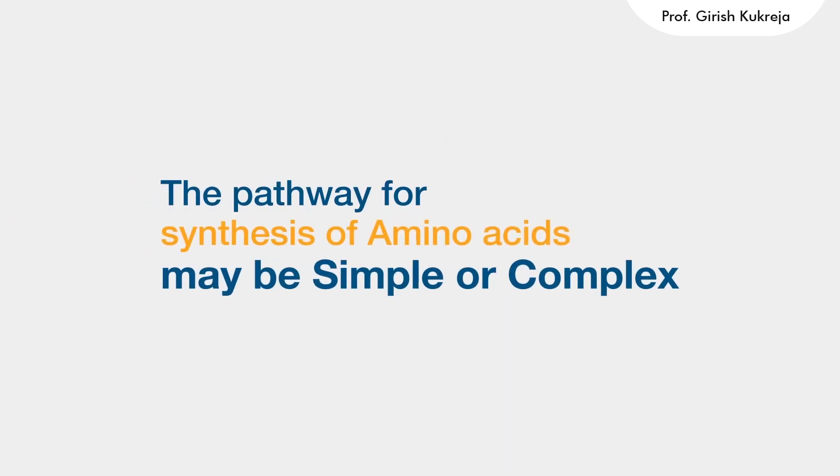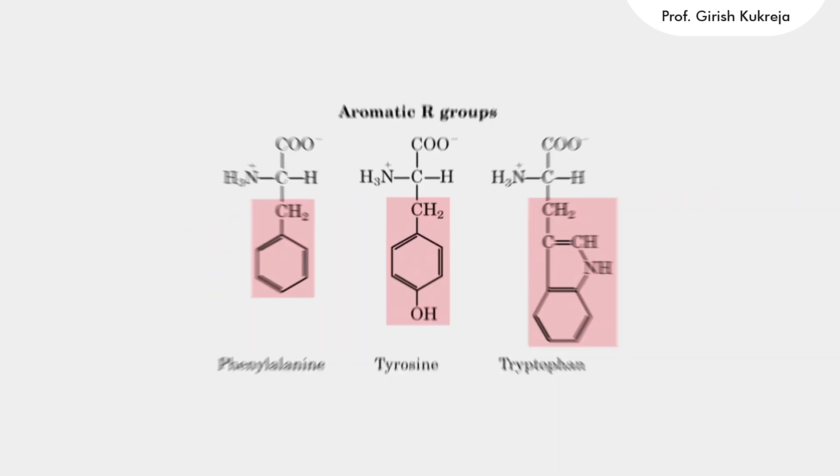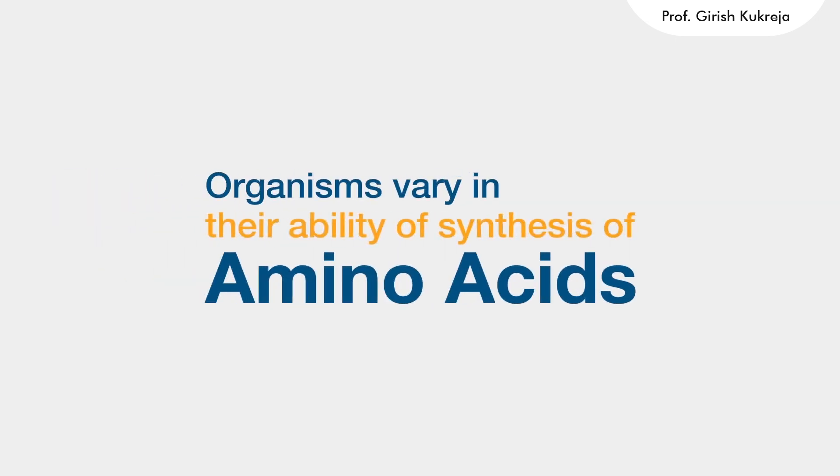The pathway for synthesis of amino acids is quite diverse. Ten of the amino acids are synthesized by only one or two steps after intermediates are removed from these respective pathways, while others have a more complex mechanism for their synthesis, like most aromatic amino acids. Different organisms also vary in their ability to synthesize these 20 amino acids.